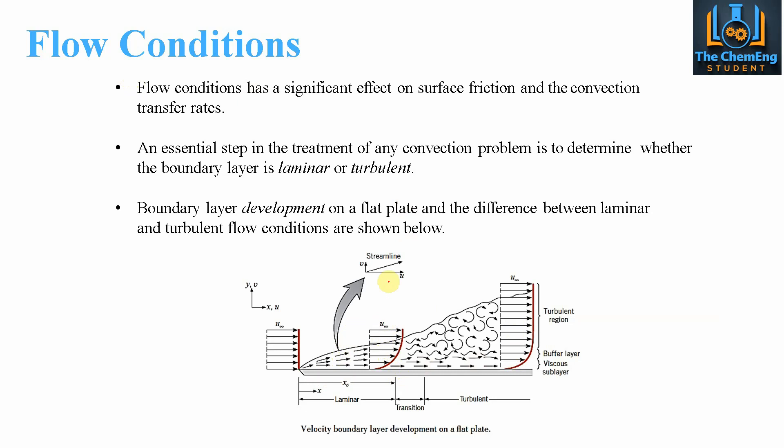This is an essential step in the treatment of any convection problem to determine whether the boundary layer is laminar or turbulent. This forms part of our heat transfer course, but also follows part of our fluid dynamics and mechanics course. Here we're talking about velocity profiles, so that's the U infinity, but you can also have a temperature profile. The flow regime will determine the rate of heat transfer. If we have laminar flow, the rate of heat transfer is less than in the turbulent region.